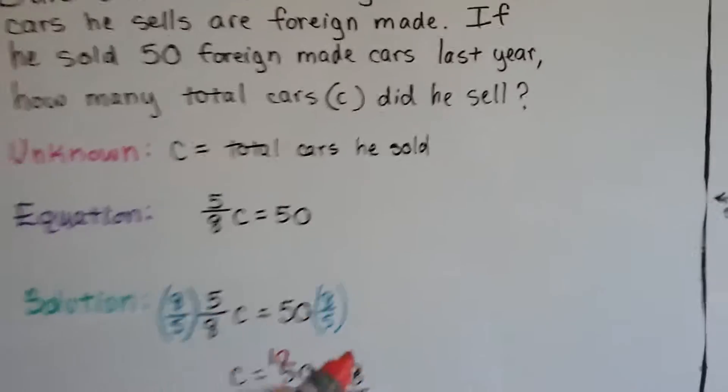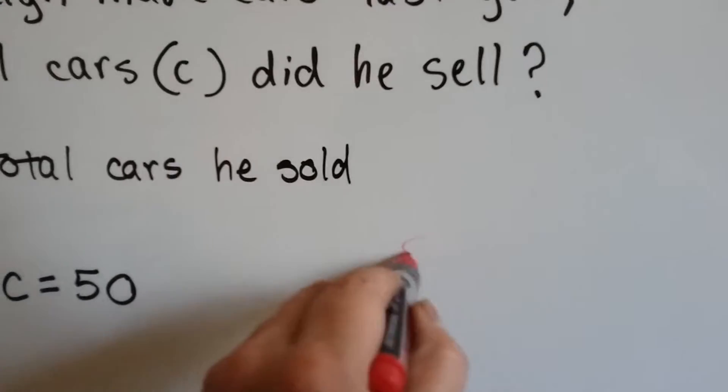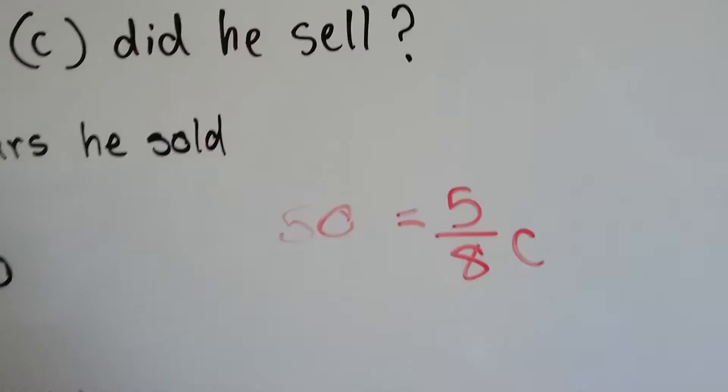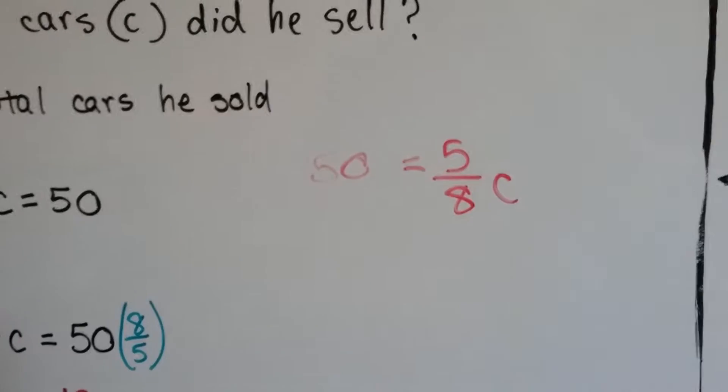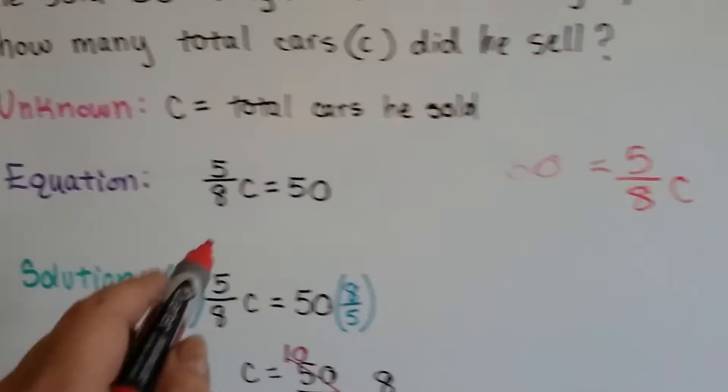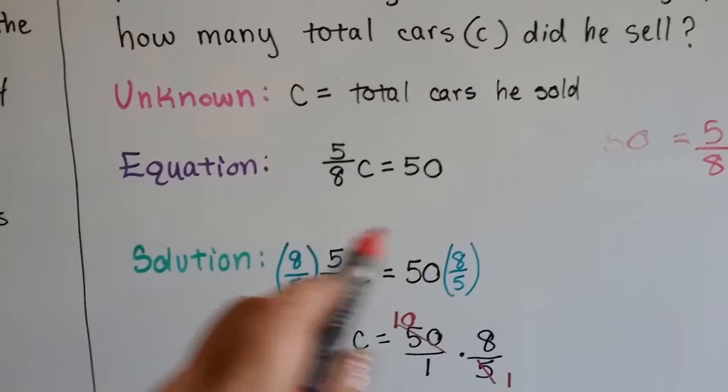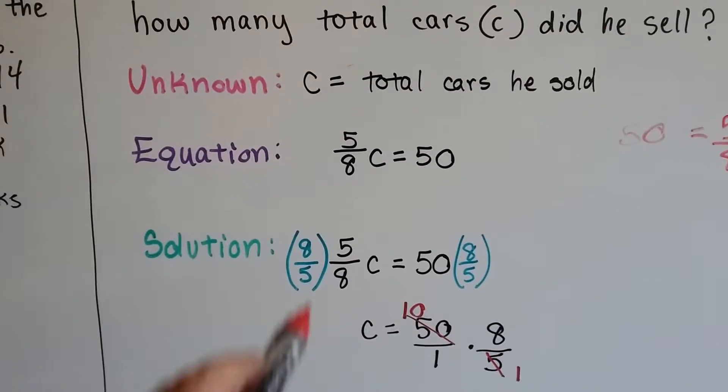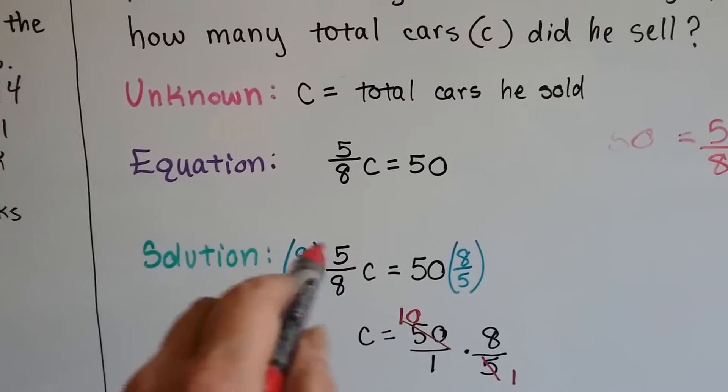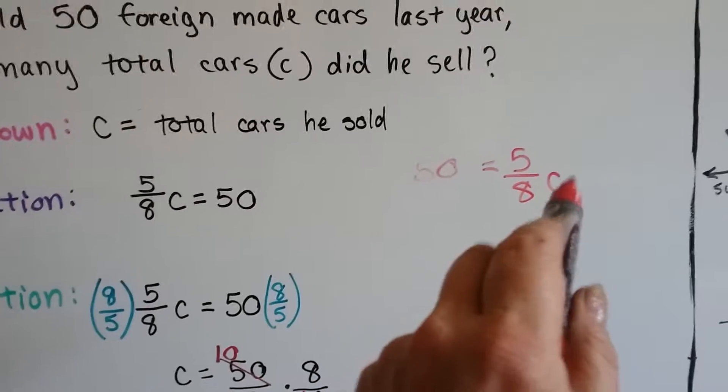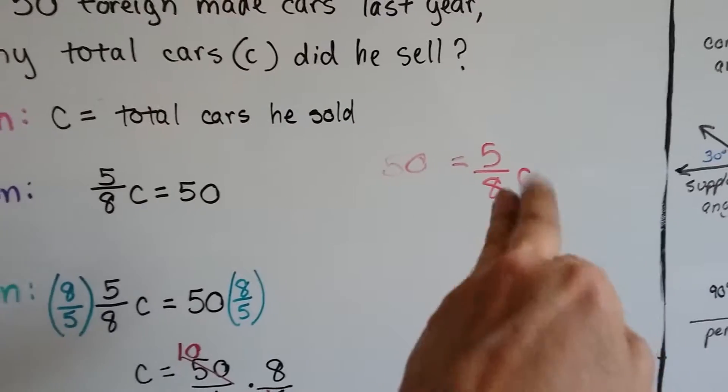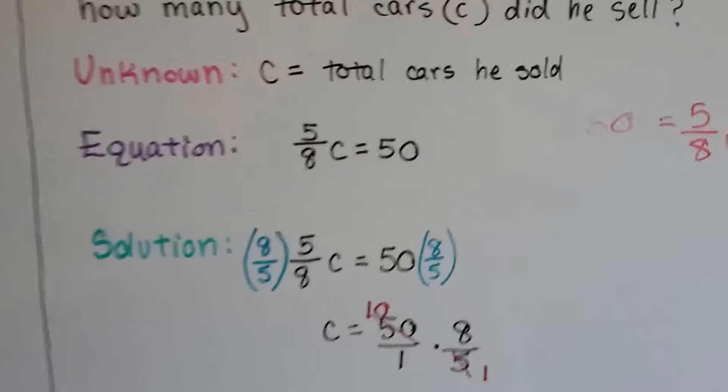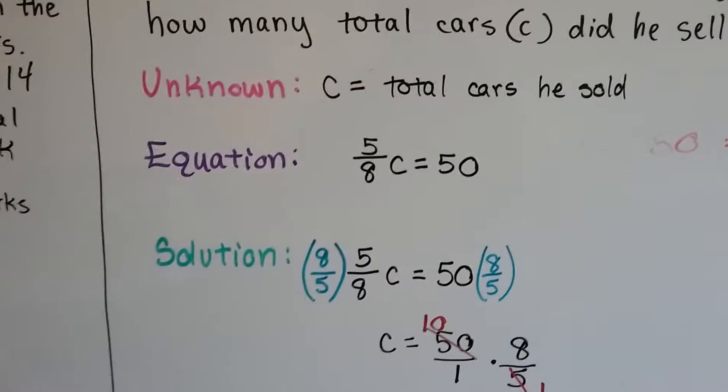Now it doesn't have to be on this side. I could have written it as 50 equals five-eighths C. It's just easier when it's this way because when we do our reciprocal on the outsides, the C is shoved over by the equal sign. That's why it makes it easier because then we can do this and we don't have that C in the way. If we did it the other way, we'd have to kind of ignore the C as we multiplied the reciprocal.